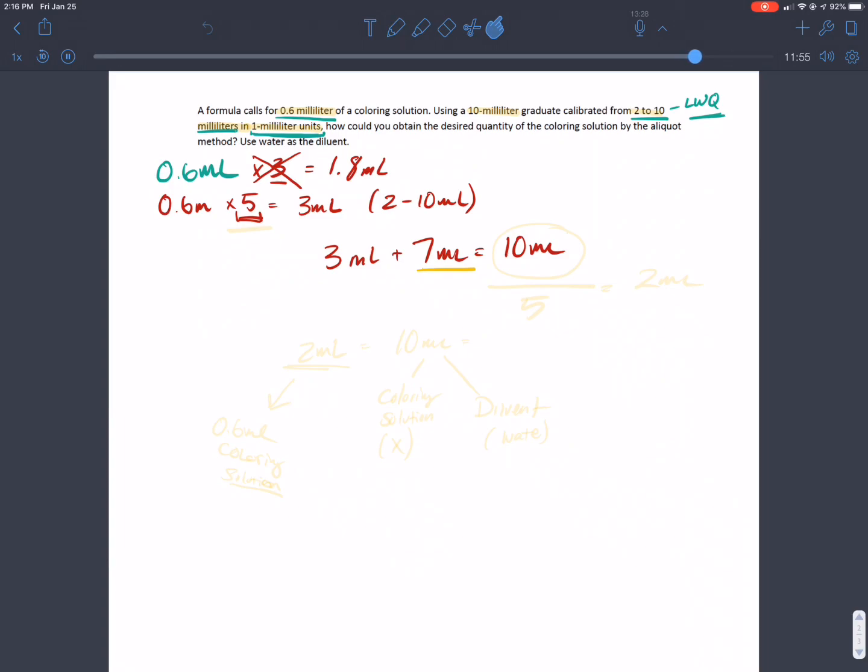So we followed through and we used the 10 mL total. Now what we want to have is this value right here, divisible by the value that we multiplied our 0.6 by, so that we can find the least measurable quantity that we need to have. So if we divide this by 5, we will be getting 2 mL total.